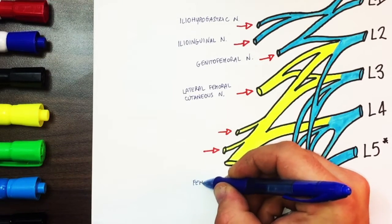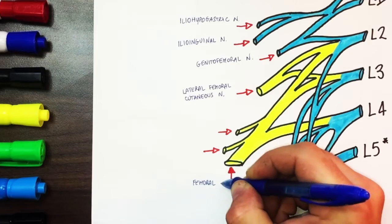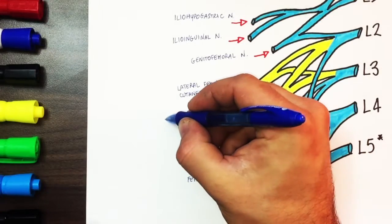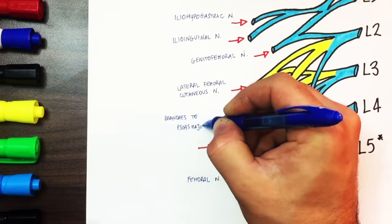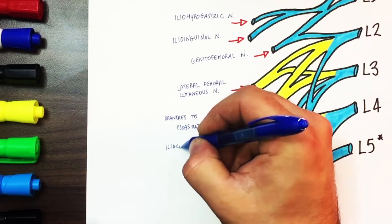From L2, L3 and L4 originates the femoral nerve which is part of the posterior division and right before traveling to the anterior thigh it gives rise to the branches innervating the psoas major muscle and iliacus muscle.